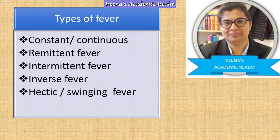Constant or continuous fever means the patient continuously has an elevated body temperature — for example, 103 degrees Fahrenheit maintained continuously. Remittent fever is characterized by a variation of more than 2 degrees between morning and evening — for example, 101 degrees Fahrenheit in the morning and 103 degrees Fahrenheit in the afternoon. There is a variation of body temperature across morning, evening, and night, but it never comes down to normal.